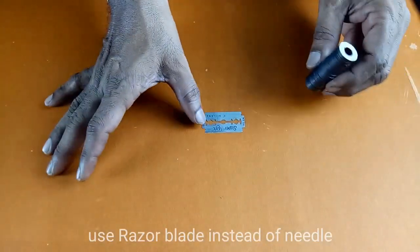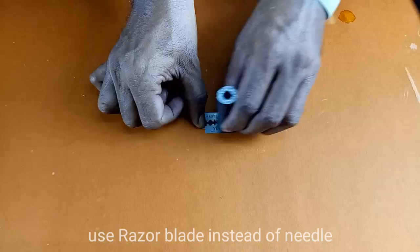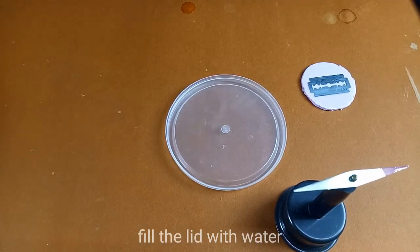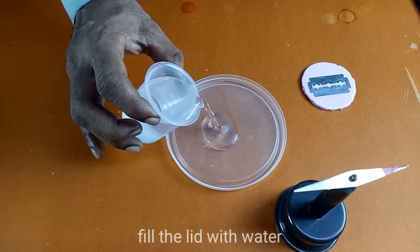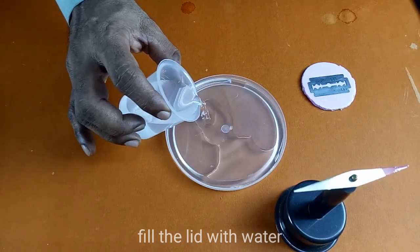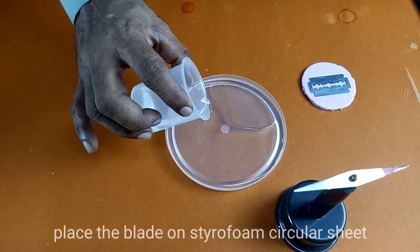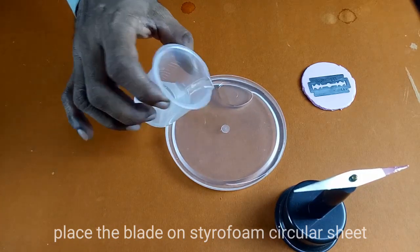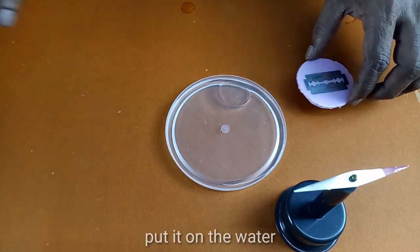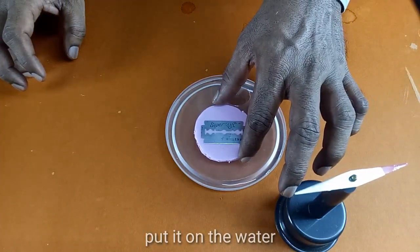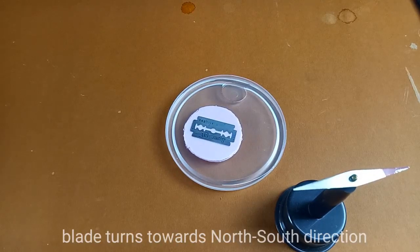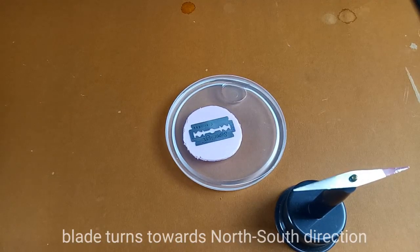Use razor blade instead of needle. Fill the lid with water. Place the blade on the styrofoam circular sheet. Put it on water. The blade turns towards north-south direction.